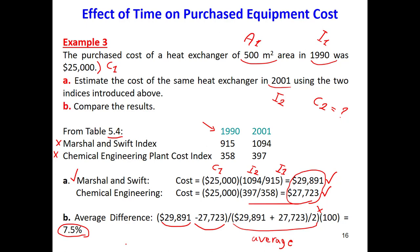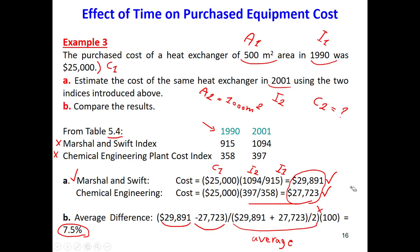We can also combine the effect of capacity and time. For example, if we want the price of a heat exchanger with 1,000 square meters in 2001, we take the already calculated 2001 cost and then apply the capacity scaling equation with ratio A_2 / A_1 raised to the power of 0.6.